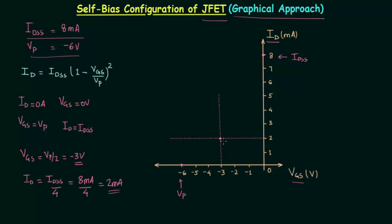Joining these three points gives the transfer curve of the N-channel JFET with IDSS = 8mA and VP = -6V. Recalling the last lecture, we obtained the input voltage VGS by applying Kirchhoff's voltage law in the input loop, and it was equal to minus ID times RS.